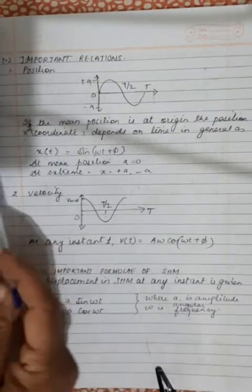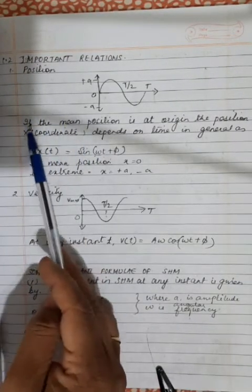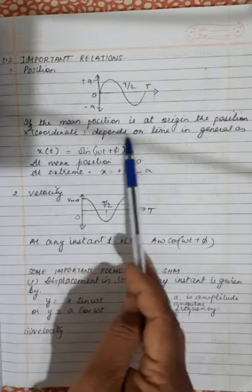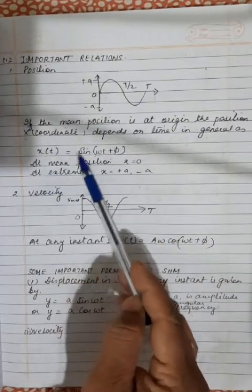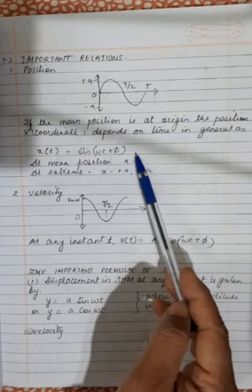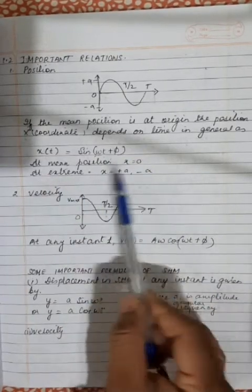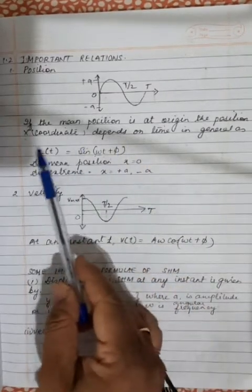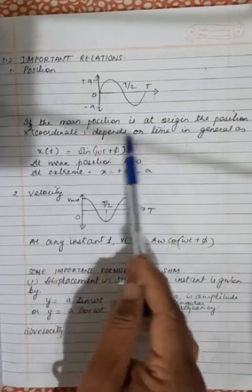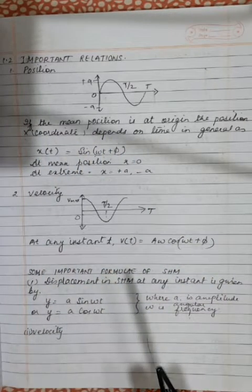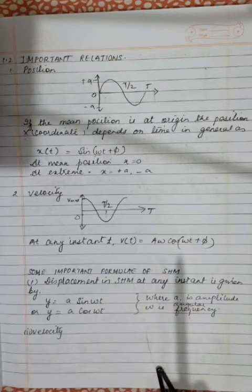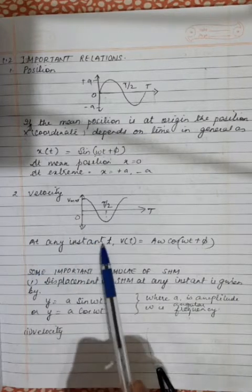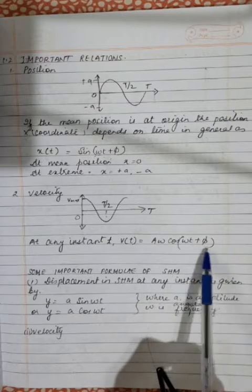Some important relations: Position — if the mean position is at the origin, the position x depends on time as x(t) = A sin(ωt + φ). At mean position x = 0, and at extreme positions x = +A or −A. For velocity, at any instant t: v(t) = Aω cos(ωt + φ).